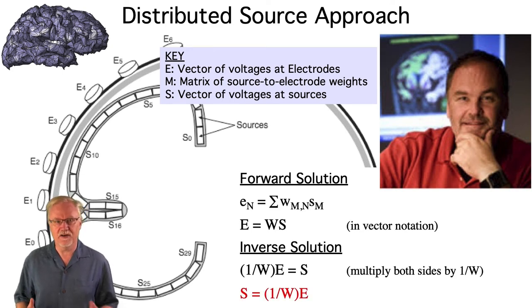We just multiply the vector of observed voltages by the inverse of the weight matrix to estimate the distribution of voltage along the cortical surface.